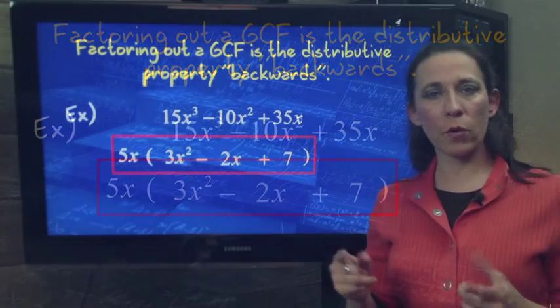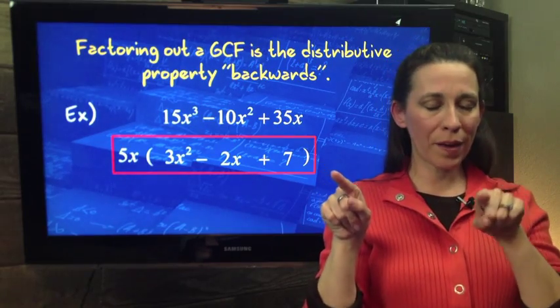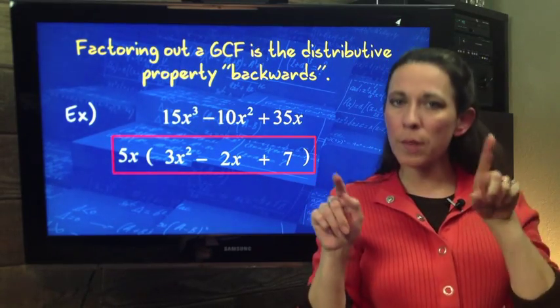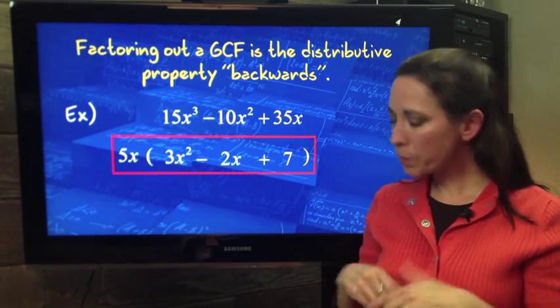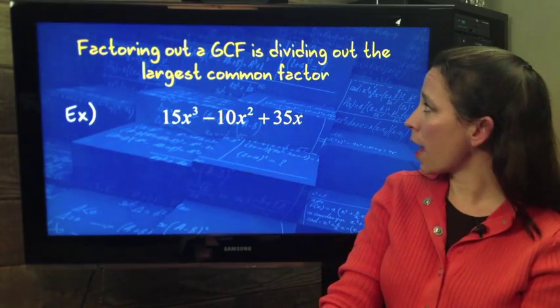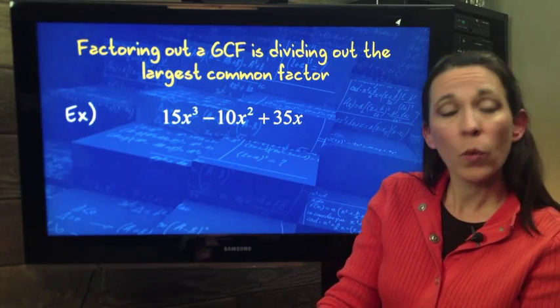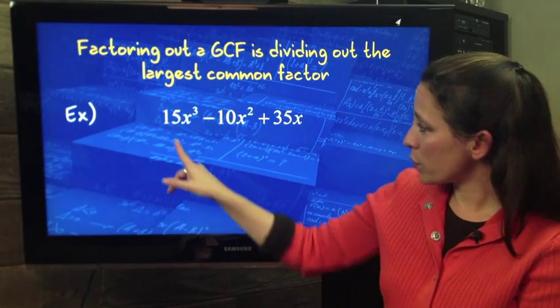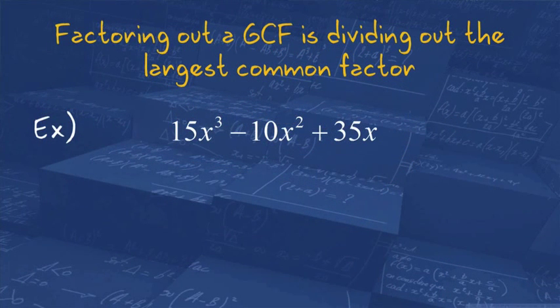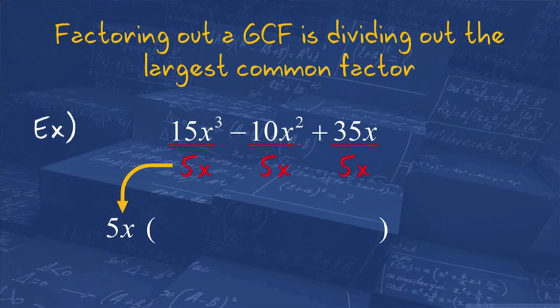So that's our result. That's the distributive property backwards. You can imagine, what would I need to multiply it by to get this term? There's another way of looking at it. Factoring out of GCF is like dividing out the largest common factor. Well, we determined the GCF was 5X, so we're going to divide everybody by the 5X.